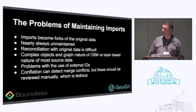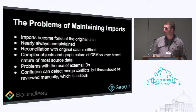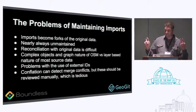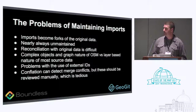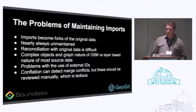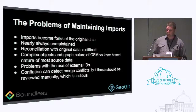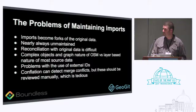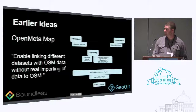There's also a whole range of problems around the use of external IDs — those can change, and if an address is pegged to a particular building and somebody splits it into a set of buildings, the external IDs aren't that useful. Conflation can detect these kinds of merge conflicts, but they should be reviewed manually and that can be really tedious. Tools like MapRoulette can help, but it's still a pretty tedious process.